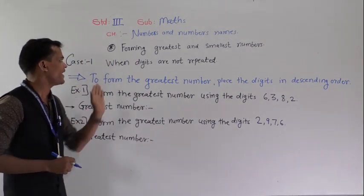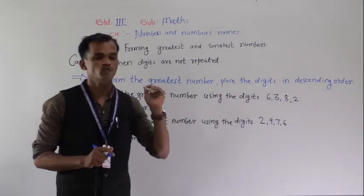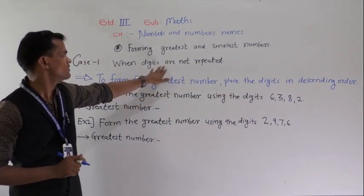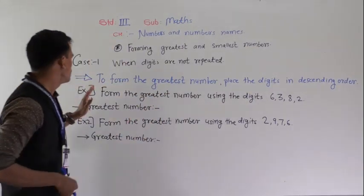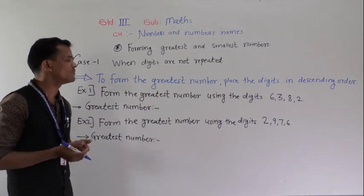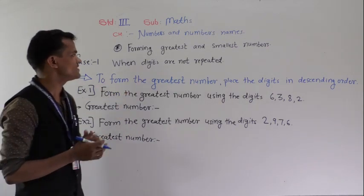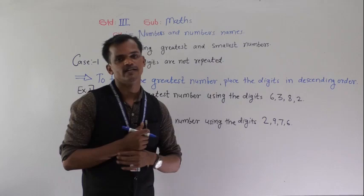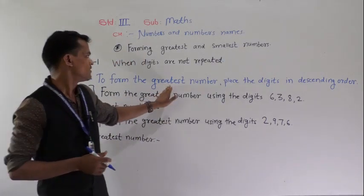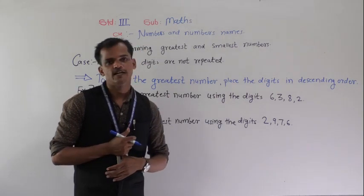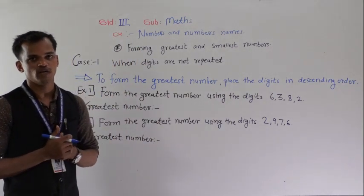The first case is when digits are not repeated. In this case, we cannot write the digit more than one time. First we will see how to form the greatest number. To form the greatest number, place the digits in descending order — means big to small order.